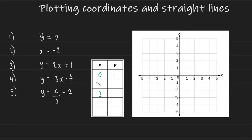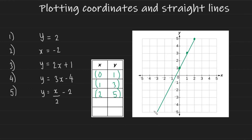When x is one, y equals two times one, which is two plus one, which is three. And when x is two, y equals two multiplied by two, which is four plus one, which is five. So our three coordinates are (0,1), (1,3), and (2,5). We plot those on the graph and connect these three coordinates with a line that stretches across the xy axis in its entirety. This line has the equation y equals two x plus one.